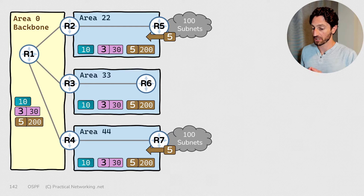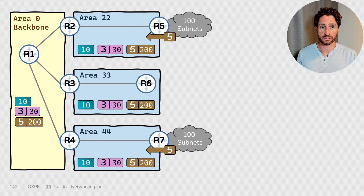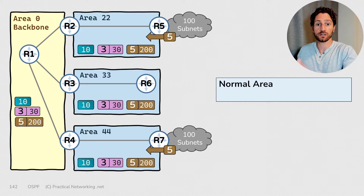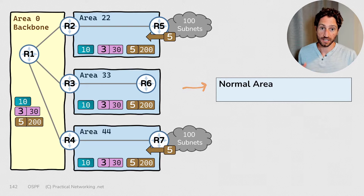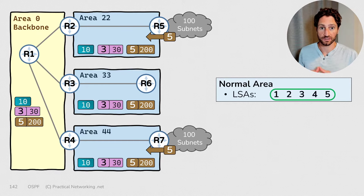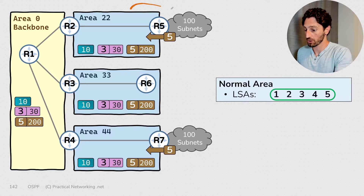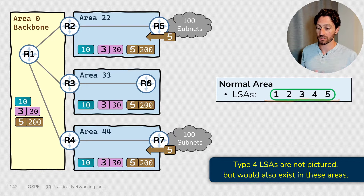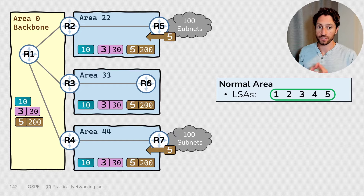That is going to be our starting point for our discussion on OSPF area types. The first type of area we're going to discuss is what's known as a normal area, and this is actually the default area type. If you don't explicitly tell an area that it is one of the other area types, it's going to assume to be a normal area. In a normal area, every type of LSA is allowed — type 1, type 2, type 3, type 4, and type 5 LSAs are all allowed to exist. Every further area type we discuss is just going to be an optimization of this type.